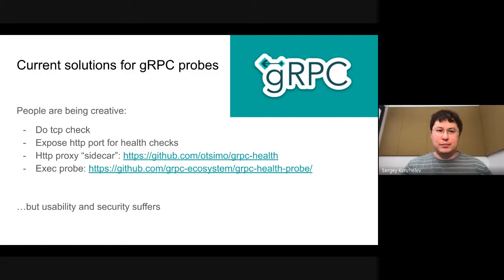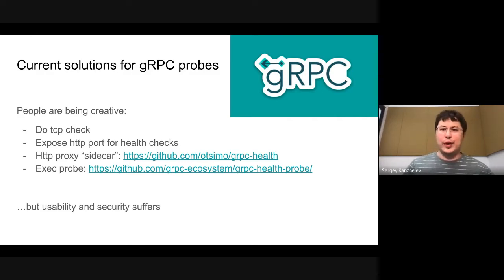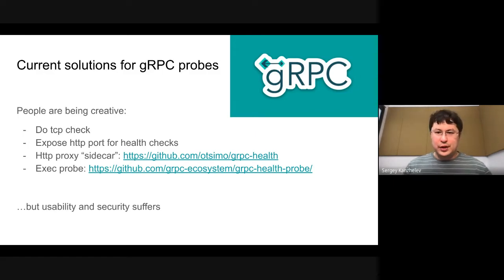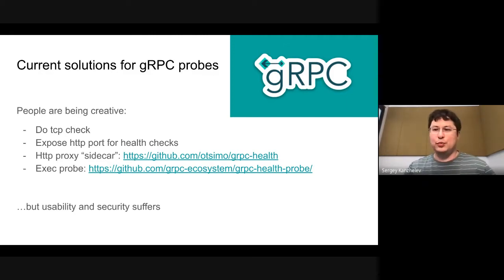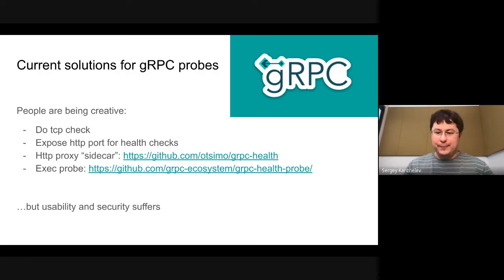Another popular solution is exec probes. Exec probes allow Kubernetes to call any executable inside your container with any parameters. If it returns 0, it's fine; if non-zero, the health check fails. The problem with that is usability and security still suffer. From a usability perspective, you need to package something extra with your application and check the security of that extra executable. Typically what people do is package a gRPC health probe executable from GitHub into their container image.